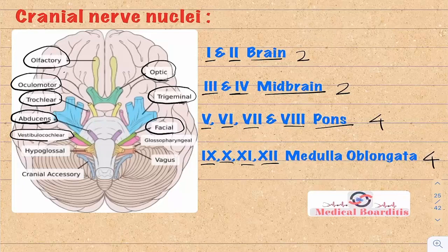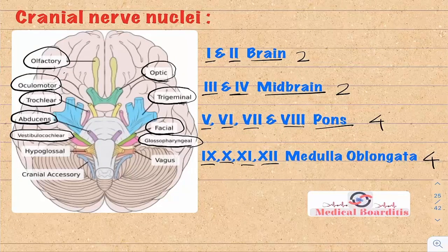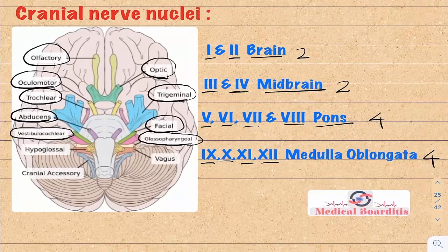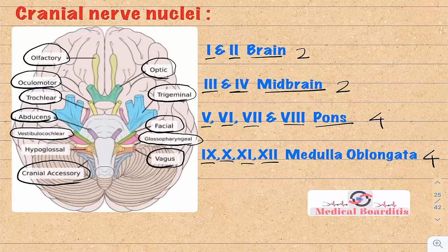Cranial nerve 8 is the vestibulocochlear nerve, responsible for hearing and balance. Cranial nerve 9, the glossopharyngeal nerve, is responsible for general and taste sensation from the posterior third of the tongue, supplies the stylopharyngeus muscle, the carotid body baroreceptors and chemoreceptors, and parasympathetic innervation to the parotid gland. Cranial nerve 10, the vagus nerve, supplies parasympathetic innervation to most thoracic and abdominal organs, motor innervation to most muscles of the pharynx and larynx for phonation and deglutition, and also supplies the carotid body baroreceptors and chemoreceptors. Cranial nerve 11, the spinal accessory nerve, supplies the sternocleidomastoid and trapezius muscles. Cranial nerve 12, the hypoglossal nerve, supplies muscles of the tongue.